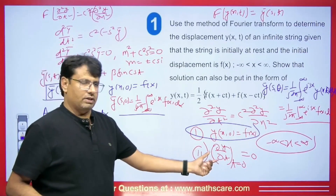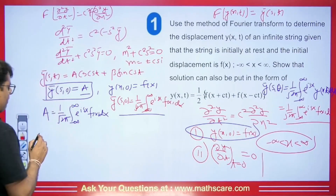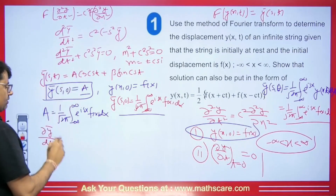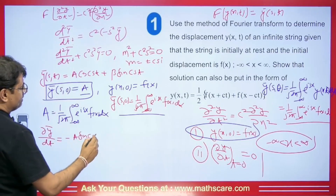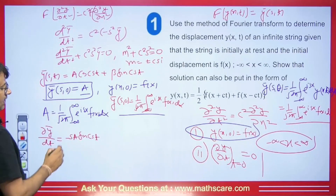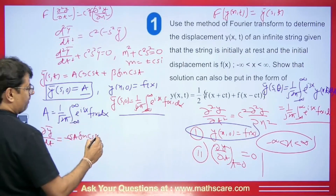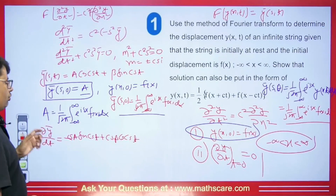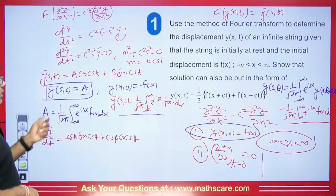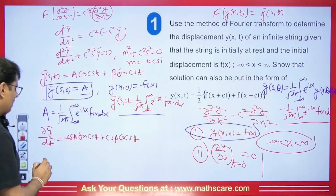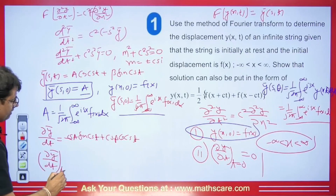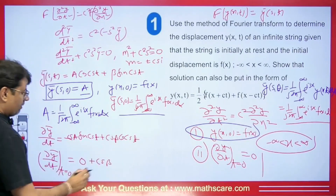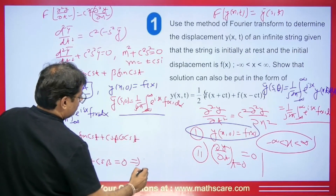We differentiate ȳ(s,t) = A·cos(cst) + B·sin(cst) with respect to t: dȳ/dt = −Acs·sin(cst) + Bcs·cos(cst). Applying the second condition, dȳ/dt at t=0 equals 0: putting t=0, sin(0)=0 and cos(0)=1, so we get Bcs = 0, which implies B = 0.